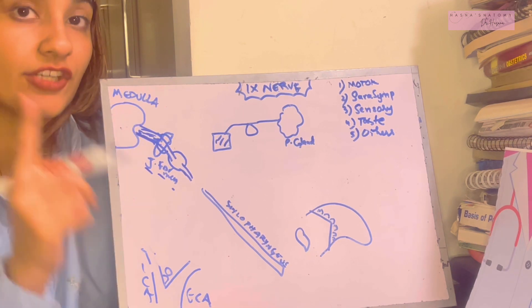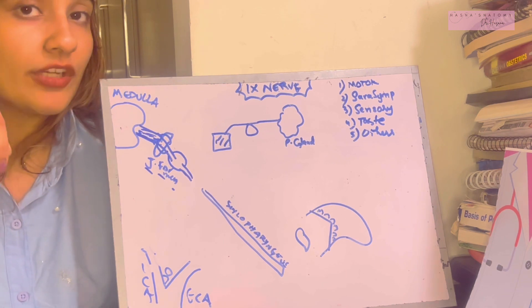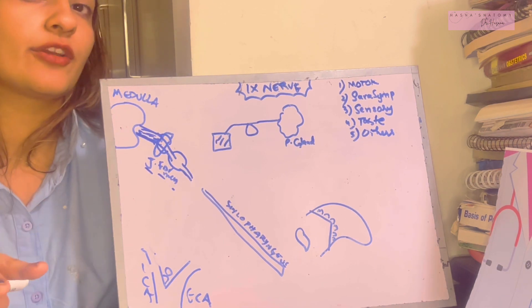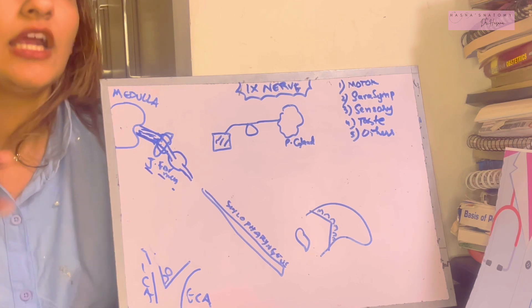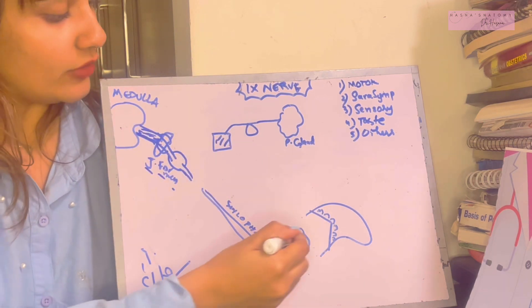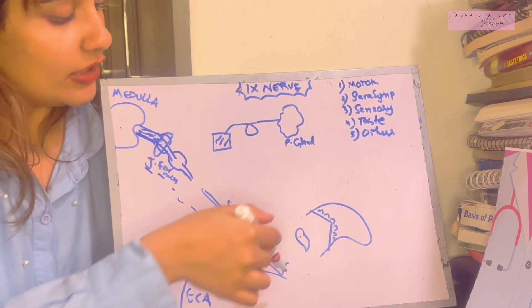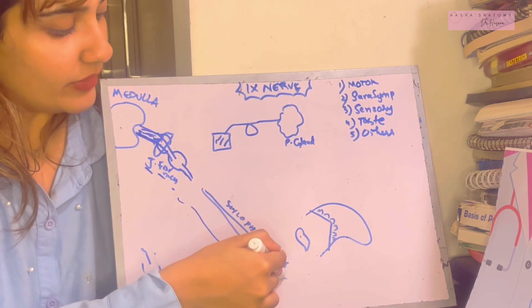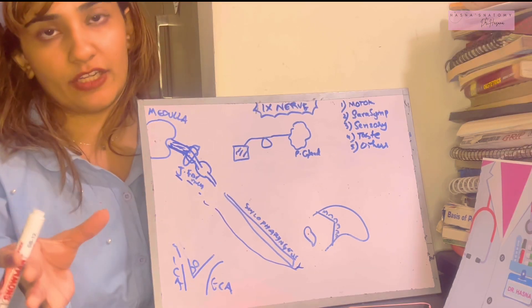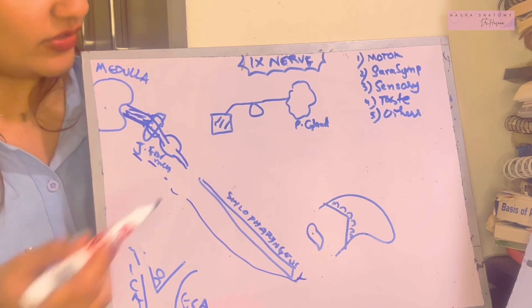After leaving the cranium, the glossopharyngeal nerve courses between the internal carotid artery and internal jugular vein, then between the internal carotid and external carotid artery, before terminating as it turns toward the tongue and tonsillar area. There it forms the dorsal and lingual branches — that is the basic course and termination of the glossopharyngeal nerve.